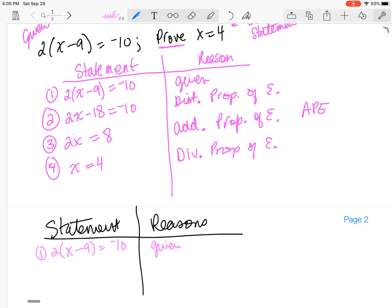All right. And my second step, let's say I divide it and that gives me x minus 9 is equal to negative 5. So then I would have used the division property of equality. So that would have been step two.